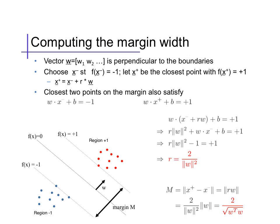Then the margin is just the distance from x minus to x plus, in other words, the length of r times w. Evaluating this is just 2 times the length of the vector w.